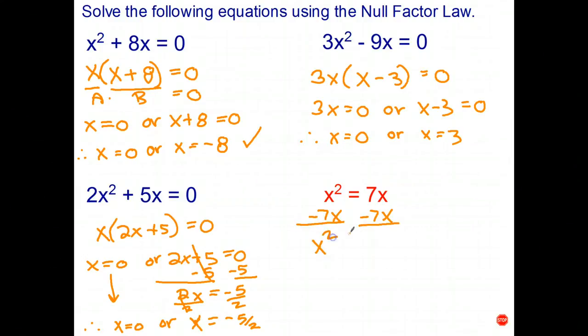And that gives us x squared take 7x on the left equals zero on the right. So we couldn't solve that equation in that form, but by rewriting it we now can. We take out a common factor of x, leaving behind x take 7. Therefore x equals 0 or x take 7 equals 0.